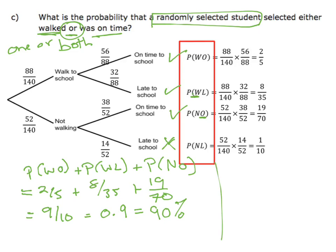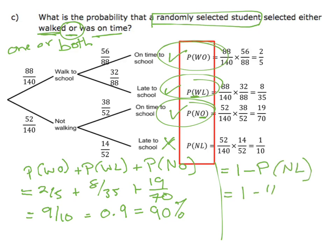That's not the only way I could have done it. I know that all 4 of the probabilities have to add up to 1, so I could have said 1 minus the probability of the one I don't want. So 1 minus 1 over 10 also gives me 9 over 10, or 0.9. There are 2 ways to get to the correct answer.